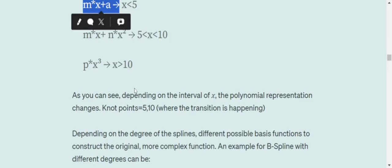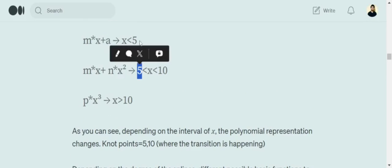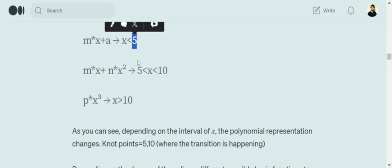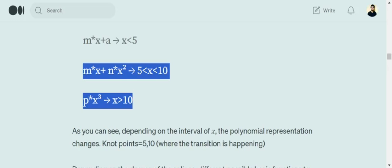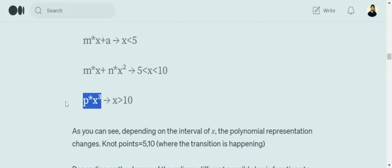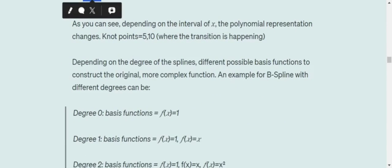Now, what are knot points? So the point at which the definition started changing is called a knot point. In this particular example, the knot points are 5 and 10, because once x hits 5, the definition changes from first expression to second. And when the value of x hits 10, it goes here.